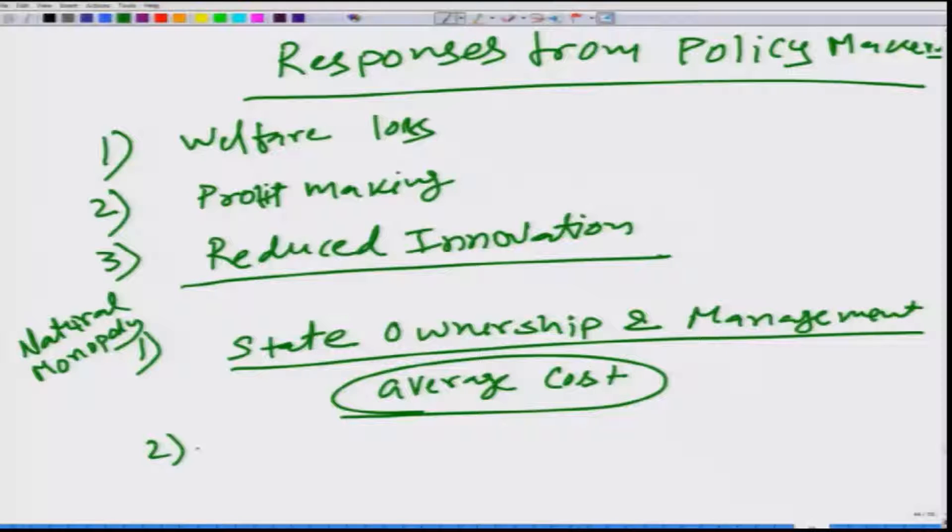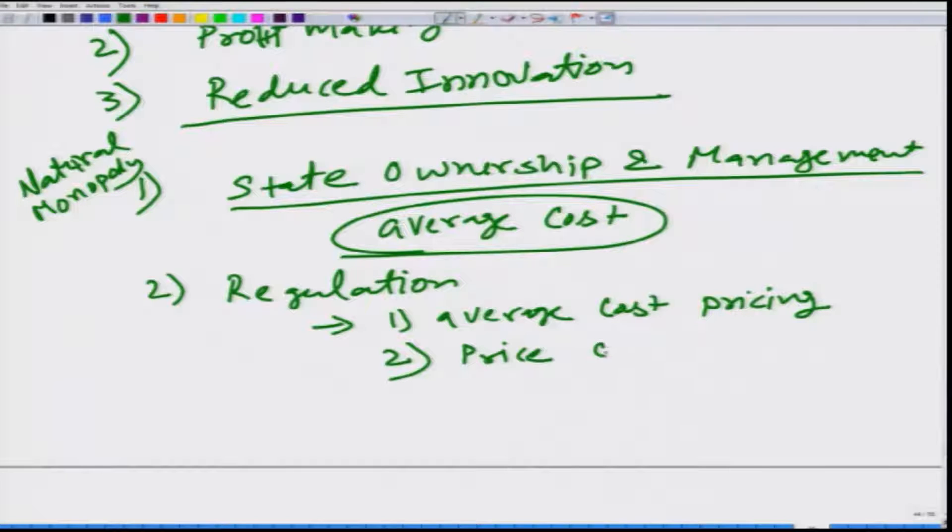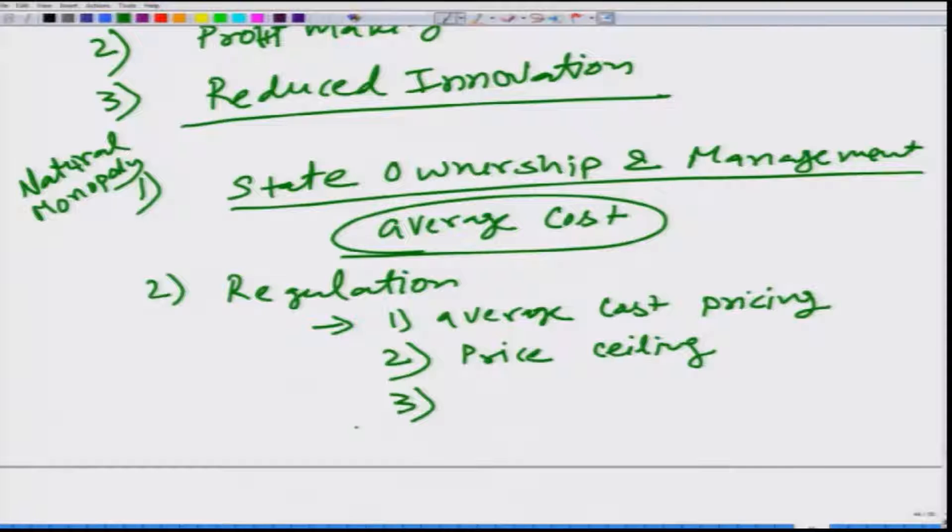Second is regulation. We have seen different kinds of regulation. Again here also the state can simply tell the Monopoly that you cannot have a price higher than this particular level. Third, which is most popular, is called rate of return policy.